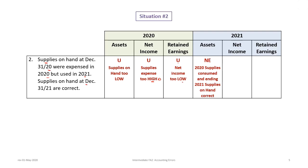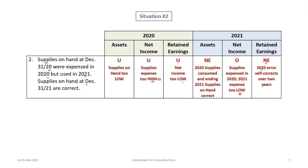For 2021, since the supplies on hand is correct and the 2020 supplies were consumed, that 2020 error has self-corrected — no effect on assets. However, the supplies expense is understated in 2021 because those supplies were expensed in 2020 instead, so net income is overstated. But retained earnings at end of 2021 show no effect, because the error self-corrected over the two-year period.